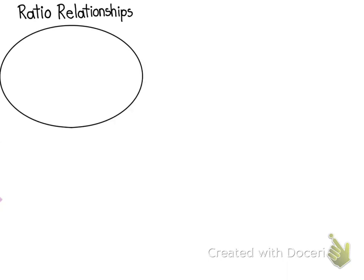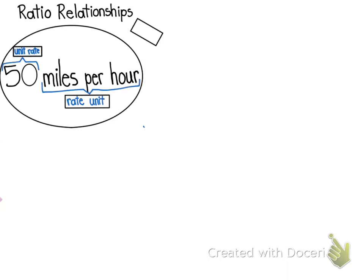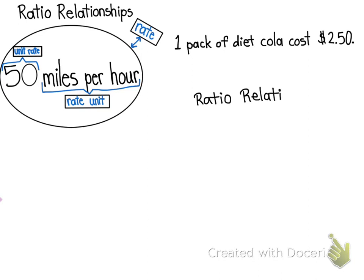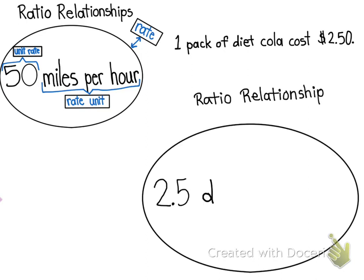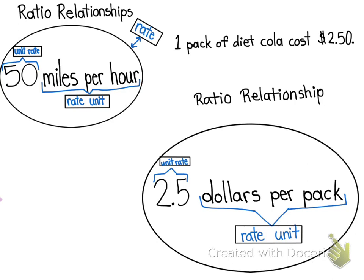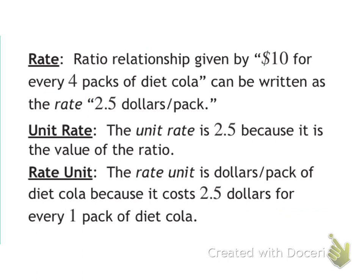Let's take a look at this ratio relationship chart again. This is what was given, and let's insert the information. It costs $2.50 for 1 pack. So we have our ratio relationship: $2.50 per pack. $2.50 is the unit rate, and dollars per pack is the rate unit. Here's a vocabulary chart if you need it — you can pause wherever you need to, or go back to either this vocabulary chart or the other chart whenever you need to refer to it.